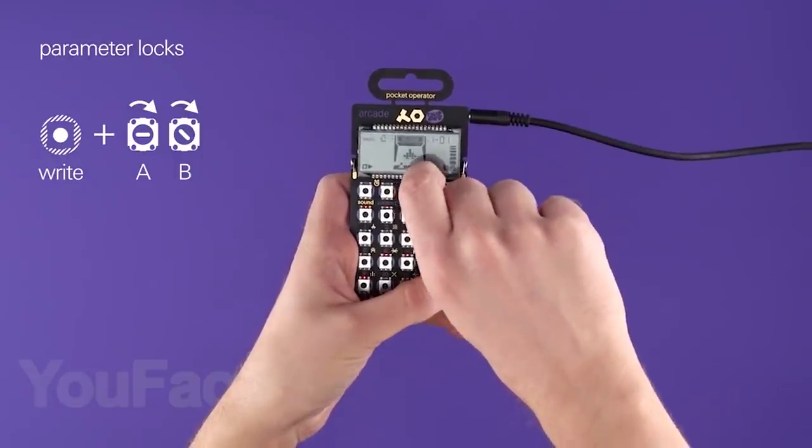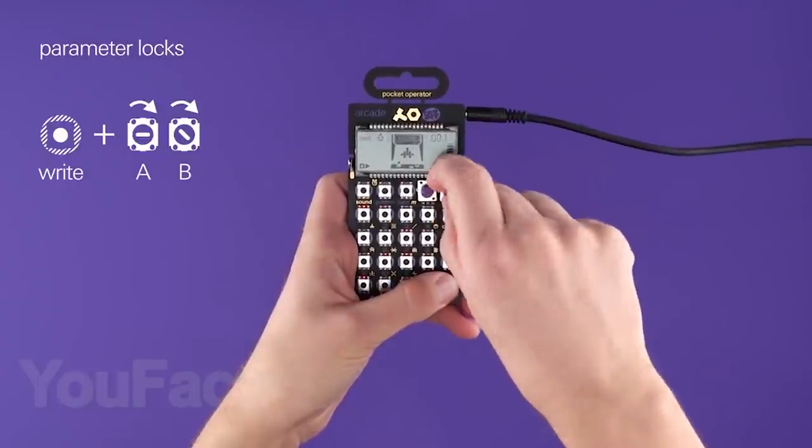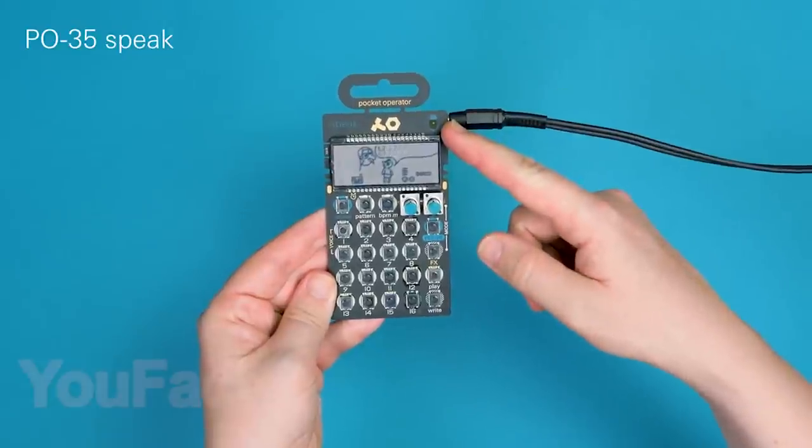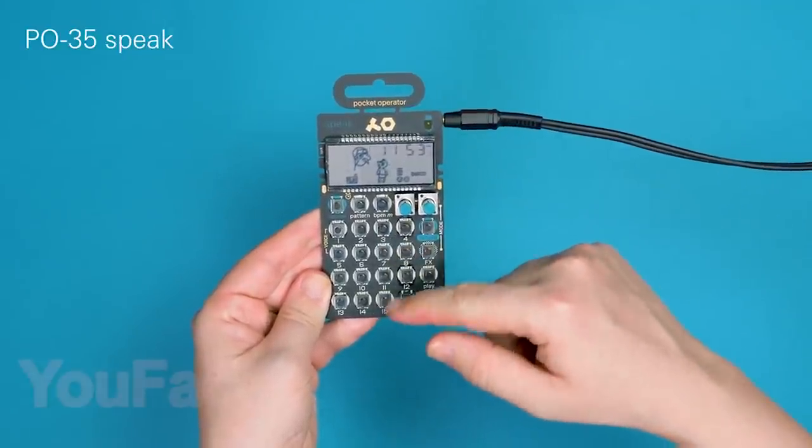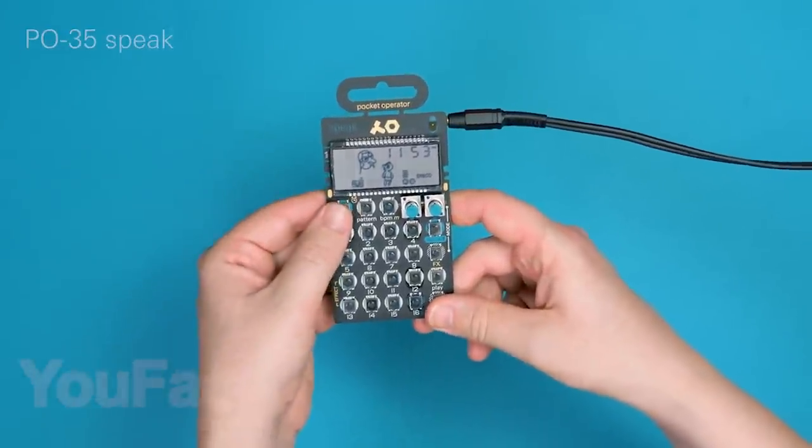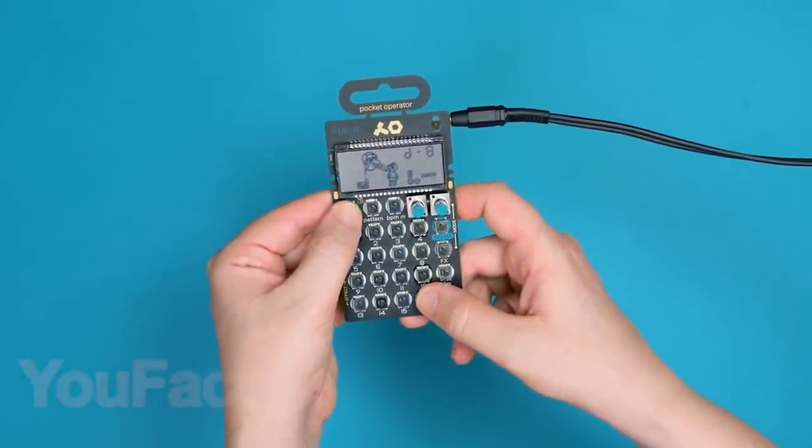You can also fine-tune the tempo between 60 and 240 beats per minute, and listen in one of three ways. Use the built-in speaker for instant sound, connect a pair of headphones for quality personal listening, or hook up the device to a speaker system to make the room shake.